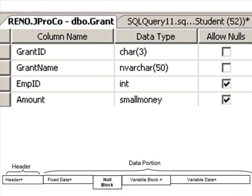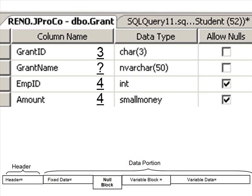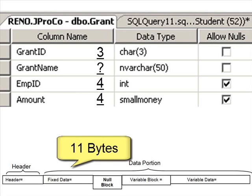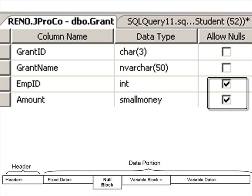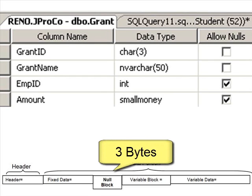Let's do the full-scale calculation of the data consumption of a row in the grant table. The header takes up four bytes. The fixed data consists of a char3 — three bytes — an int — four bytes — and a smallmoney — four bytes. Therefore, our fixed data is eleven bytes. The null block: do we have any nullable data? If yes, a two-byte null block is born. How many total fields do we have? Four. That's between one and eight, so it's going to take up another byte in the null block. Our null block is now three bytes.